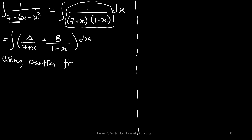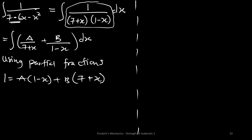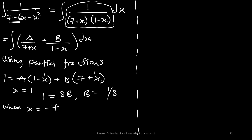Using partial fractions, we have 1 = A(1 − x) + B(7 + x). Setting x = 1, we get 1 = 8B, so B = 1/8. Setting x = −7, we get 1 = 8A, so A = 1/8.